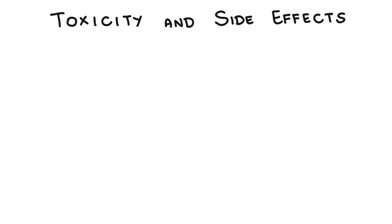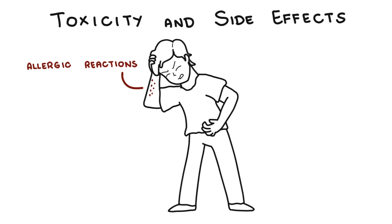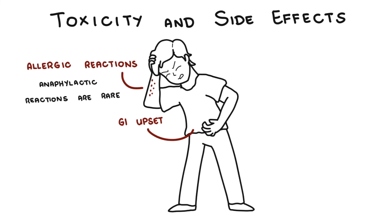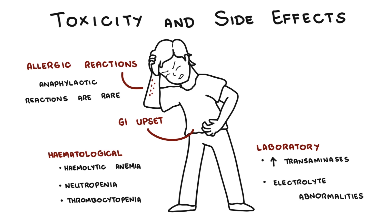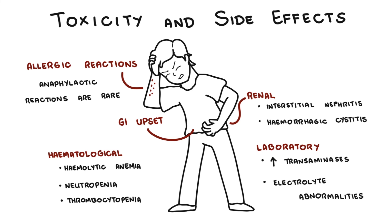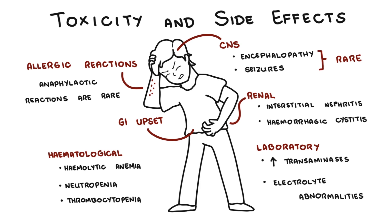Adverse effects and toxicity: allergic reactions are common and include skin rash, serum sickness, and delayed hypersensitivity. Anaphylactic reactions are very rare. GI upset such as diarrhea is common, and enterocolitis can be seen, especially with ampicillin. Hematological abnormalities such as hemolytic anemia, neutropenia, and thrombocytopenia can be seen in up to 4%. Penicillins can cause an elevation in transaminases, usually with flucloxacillin, as well as mild electrolyte abnormalities such as hyponatremia. Renal complications include interstitial nephritis and hemorrhagic cystitis. CNS complications include encephalopathy and even seizures, which are extremely rare but may occur especially in renal failure or on prolonged doses.